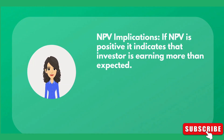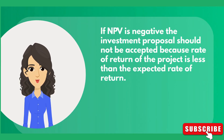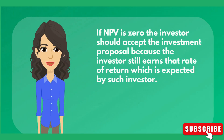NPV implications: if NPV is positive, it indicates that the investor is earning more than expected. If NPV is negative, it indicates that the investor is earning less than expected. If NPV is zero, it indicates that the investor is earning exactly what is expected. A negative NPV means the investment proposal should not be accepted, because the rate of return of the project is less than the expected rate of return. If NPV is zero, the investor should accept the proposal, because the investor still earns the rate of return which is expected.